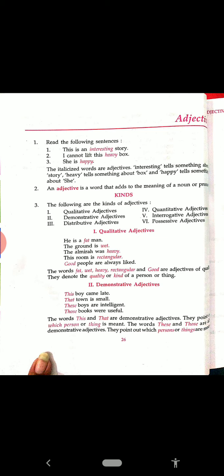The first one is qualitative adjectives — this we have done yesterday also. The words that are telling the qualities of any person, place, thing, or we may say noun or pronoun. They are telling the qualities, good things — it may be any. Just as: He is a fat man. What type of man? Fat.